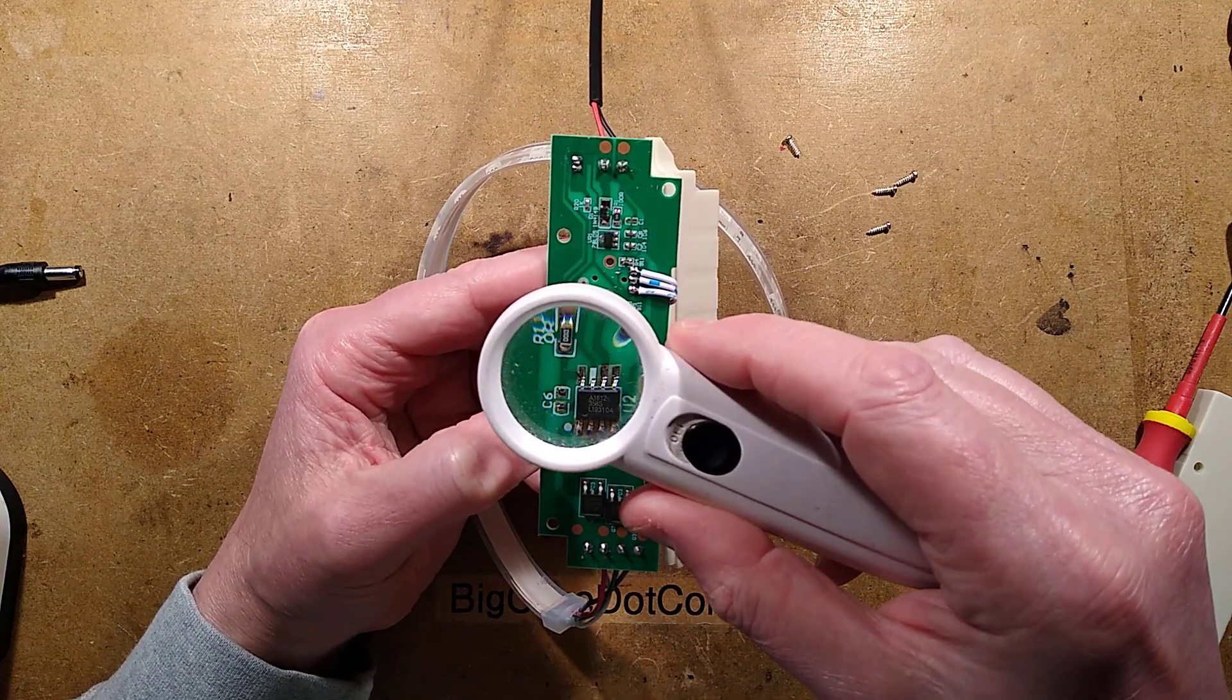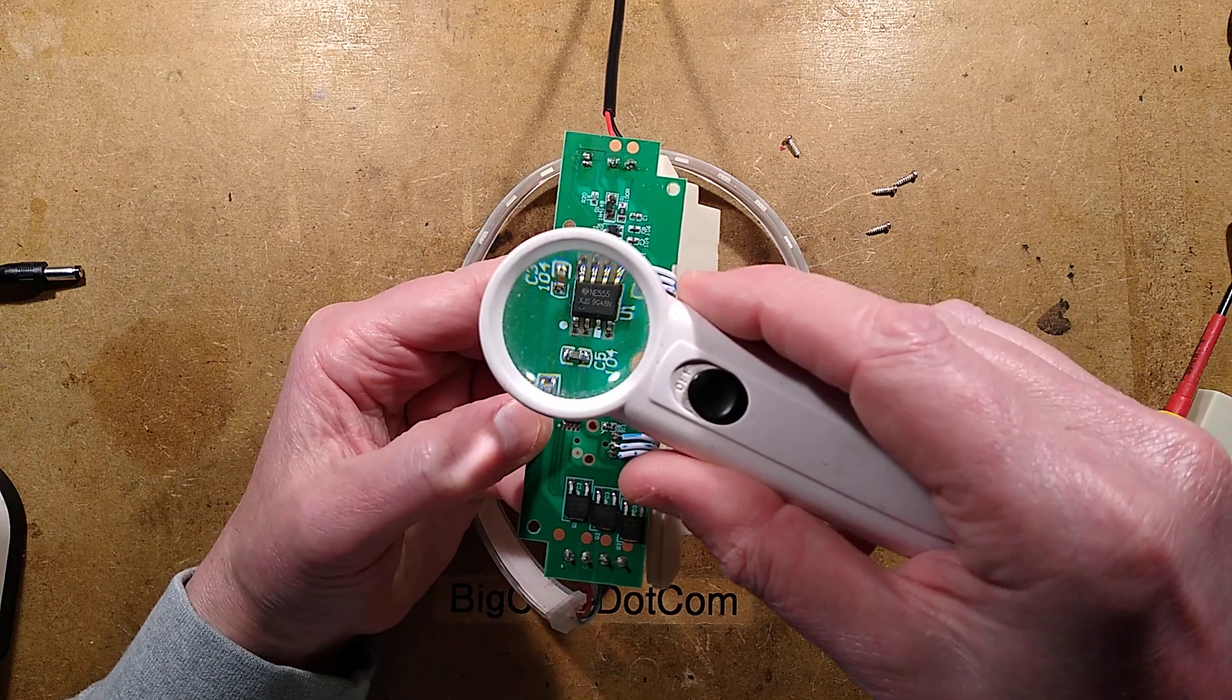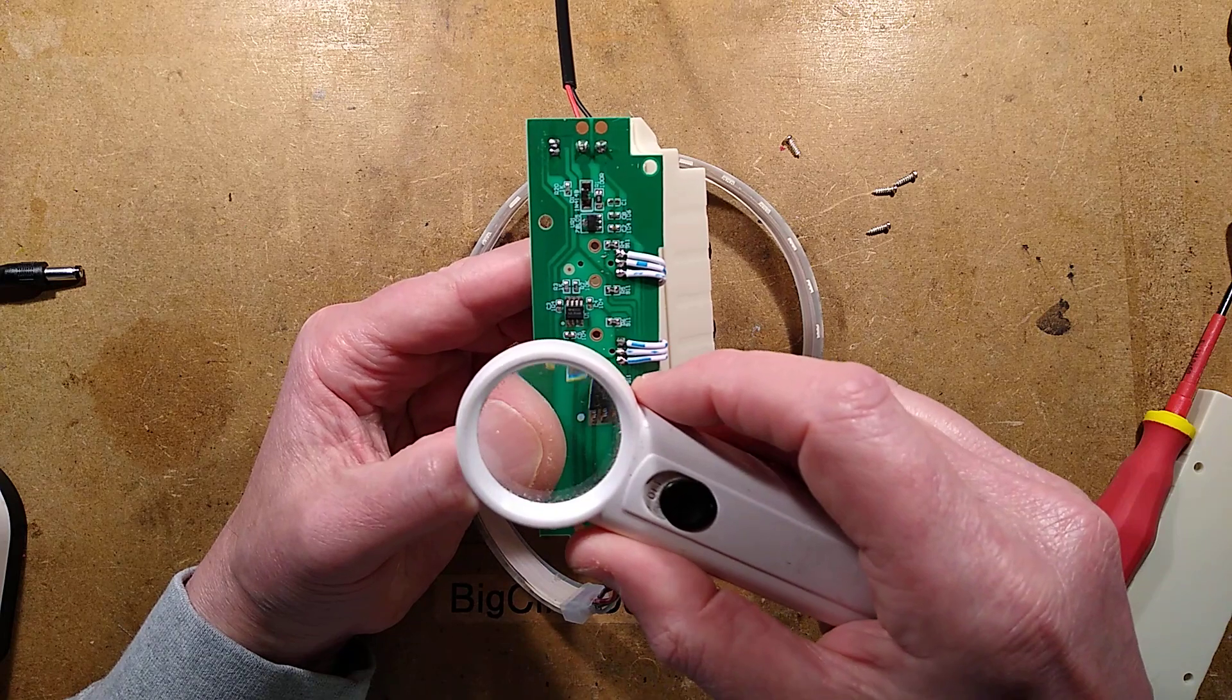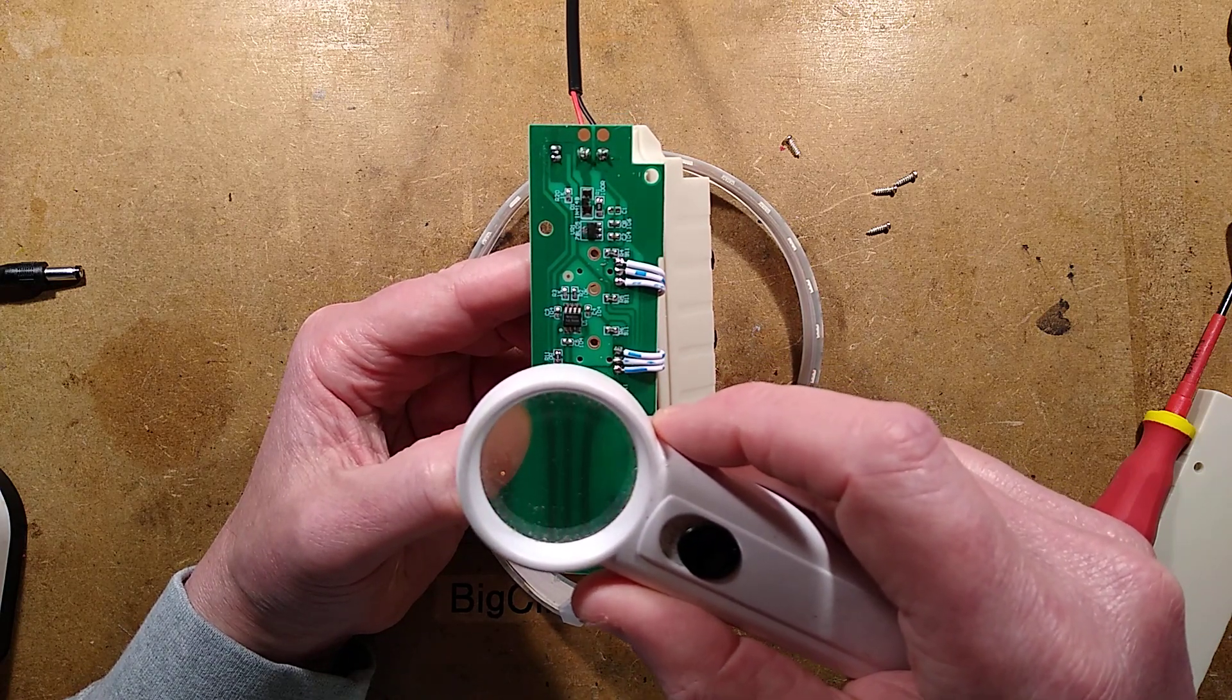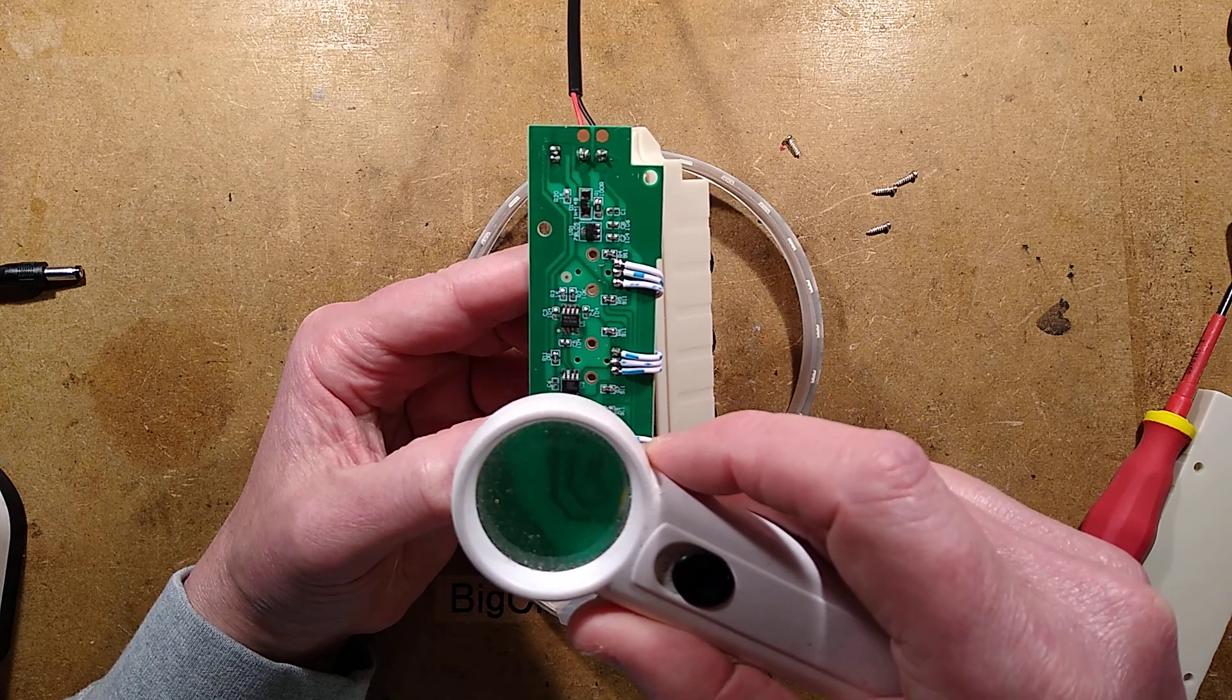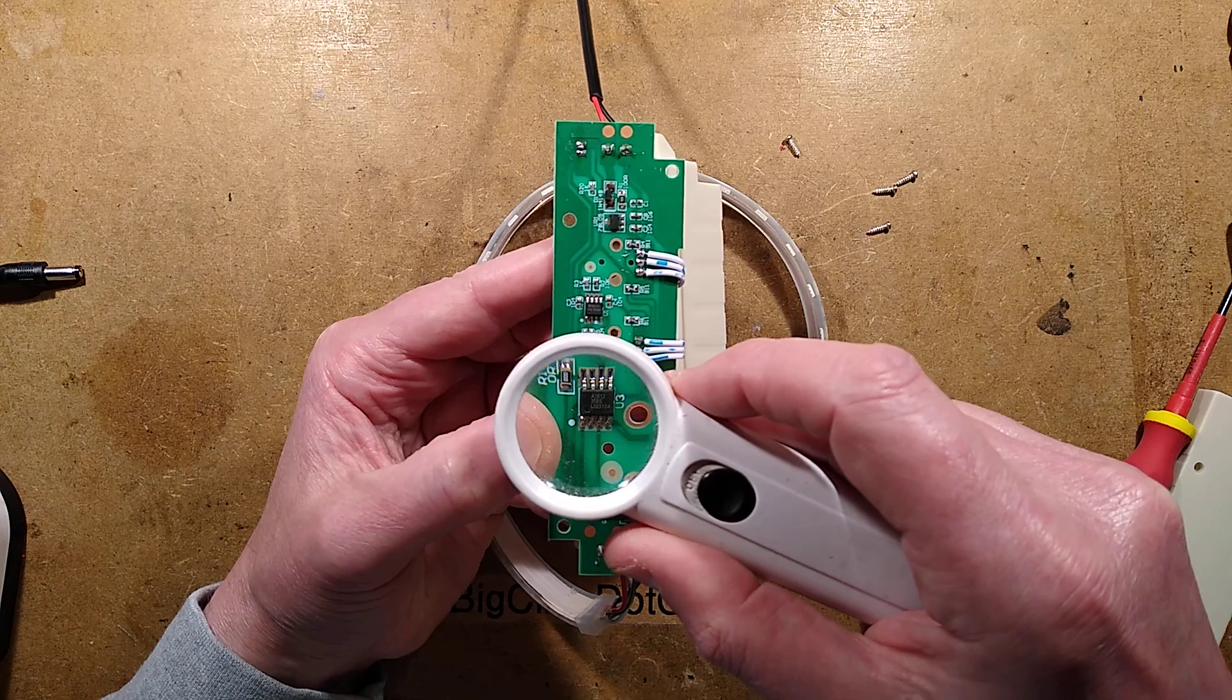I shall take a picture of this and reverse engineer it. I want to see though. There's a 555. So that's generating probably a ramp I'd guess. And what are these? A1612. Oh, 358S. They're dual op amps. 358. Like the LM358.